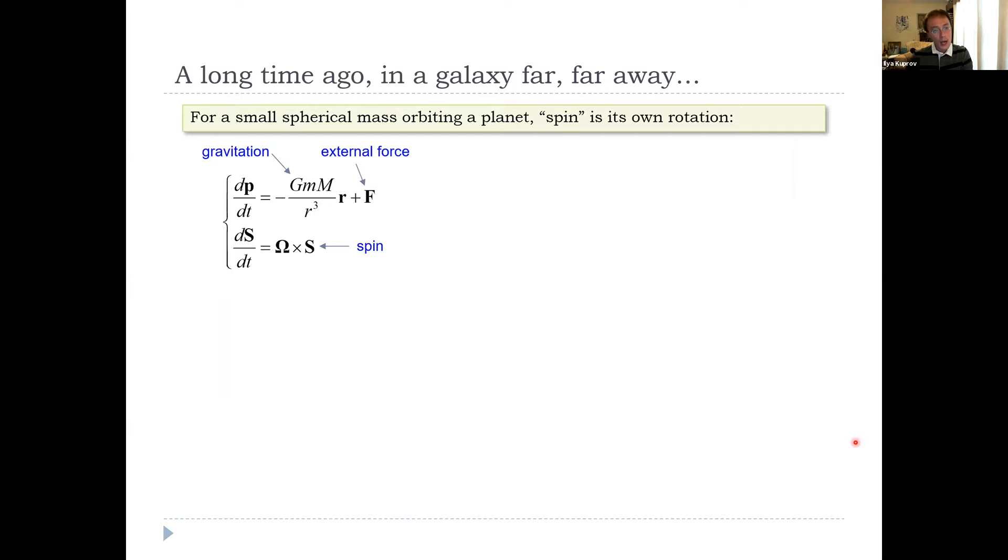Interestingly, there was one category of people who were not at all surprised about spin—astronomers. They said, well, the body is rotating, so what? To them, the quantity is unremarkable. If you have a spherical mass orbiting some planet, spin is simply its own rotation.